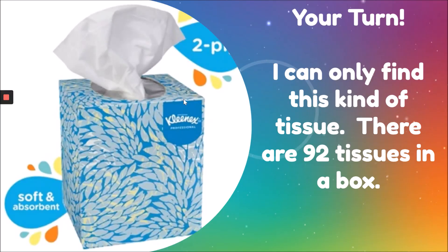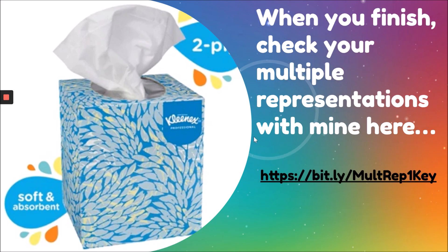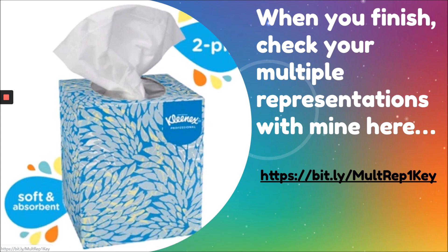Okay, your turn. I can only find this kind of tissue. It's a smaller box and there are 92 tissues in a box. Use these details to create multiple representations. So Rex still uses two tissues per day, but now the box only has 92 tissues in it. Create multiple representations that represent this situation and these relationships. Whenever you're done, check your work with mine by using this short link to open up where I've drawn my multiple representations. Have fun!